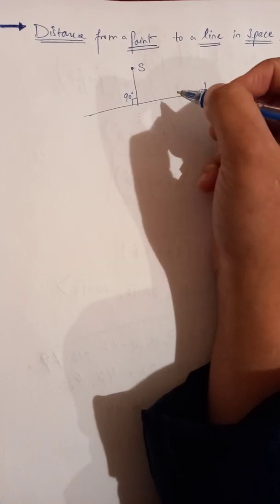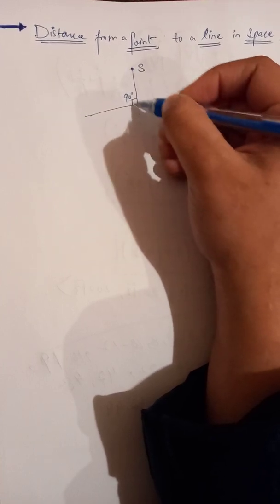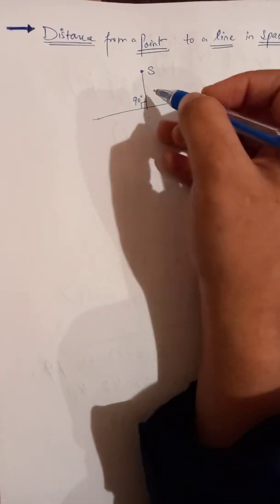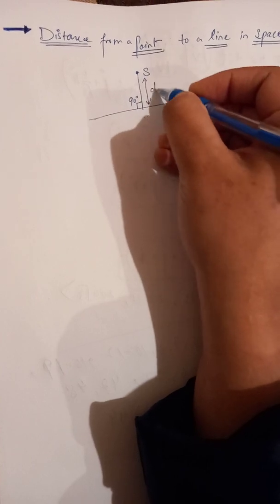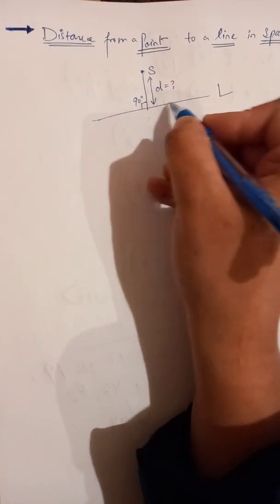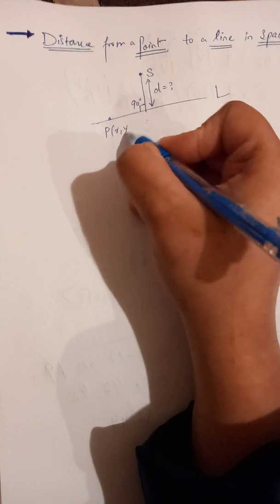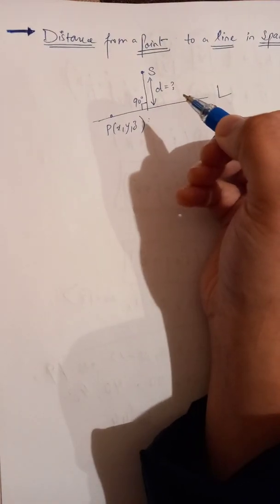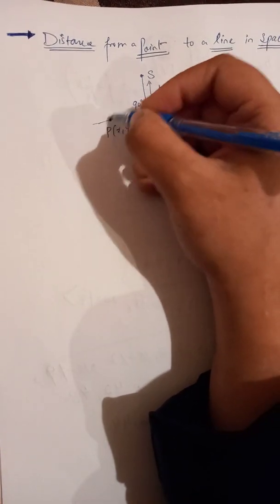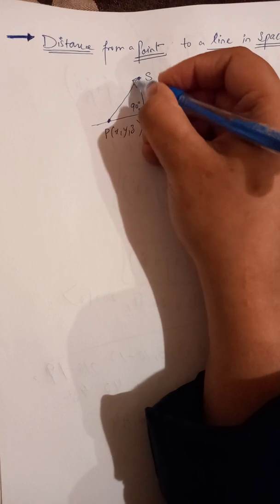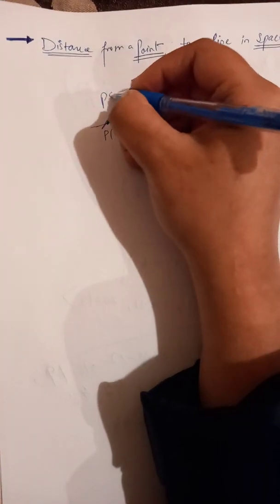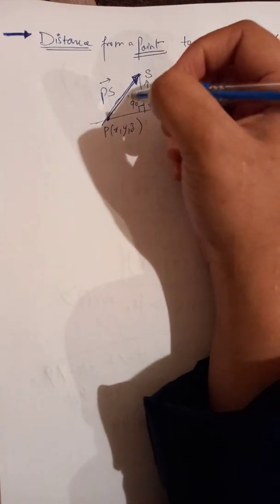This perpendicular line makes a 90-degree angle with the line. To find the shortest distance d, we consider another point P on the line with coordinates x, y, z. If we join P and S and represent the joining as a vector, that vector will be called PS.